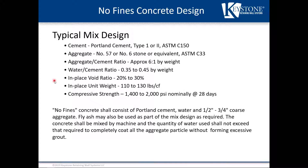No fines concrete consists of Portland cement, water, and half-inch to three-quarter-inch coarse aggregate. Fly ash may also be used as part of the mix design as required. The concrete is machine-mixed, and the quantity of water used shall not exceed what is required to completely coat all aggregate particles without forming excessive grout — essentially a standard concrete mix with less water and without the fine aggregate portion. The open structure allows water to freely flow through the backfill while providing a solid concrete mass, effectively making the facing block and no fines concrete act as one solid mass.